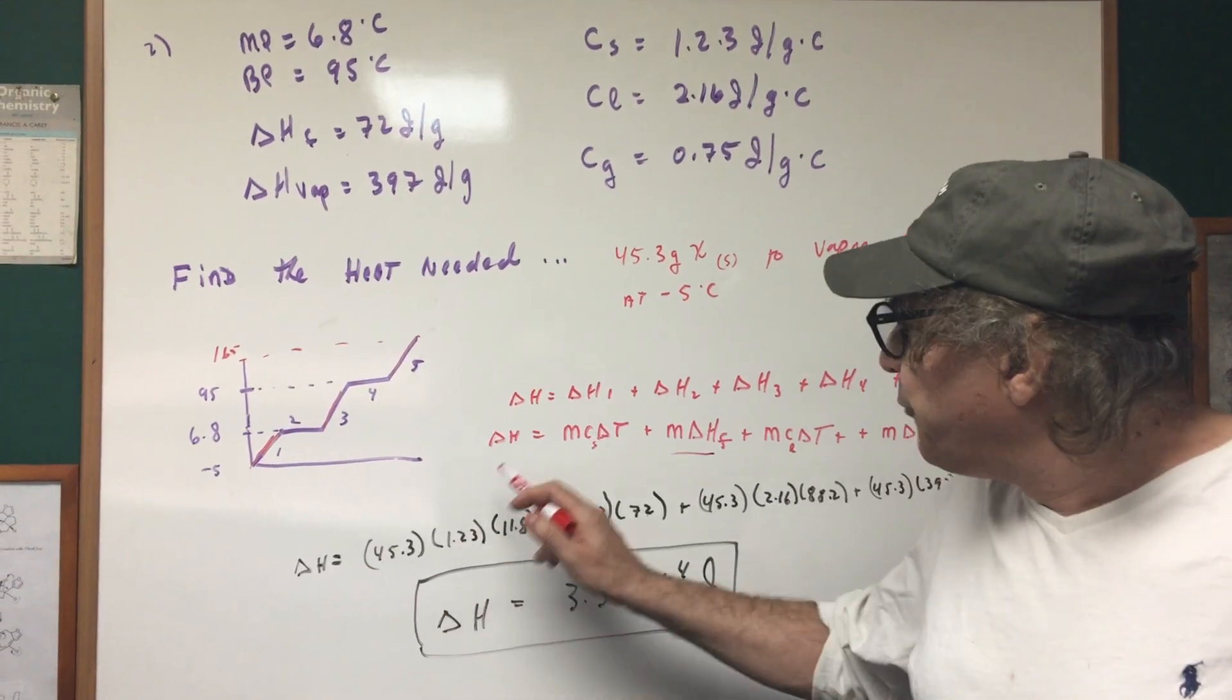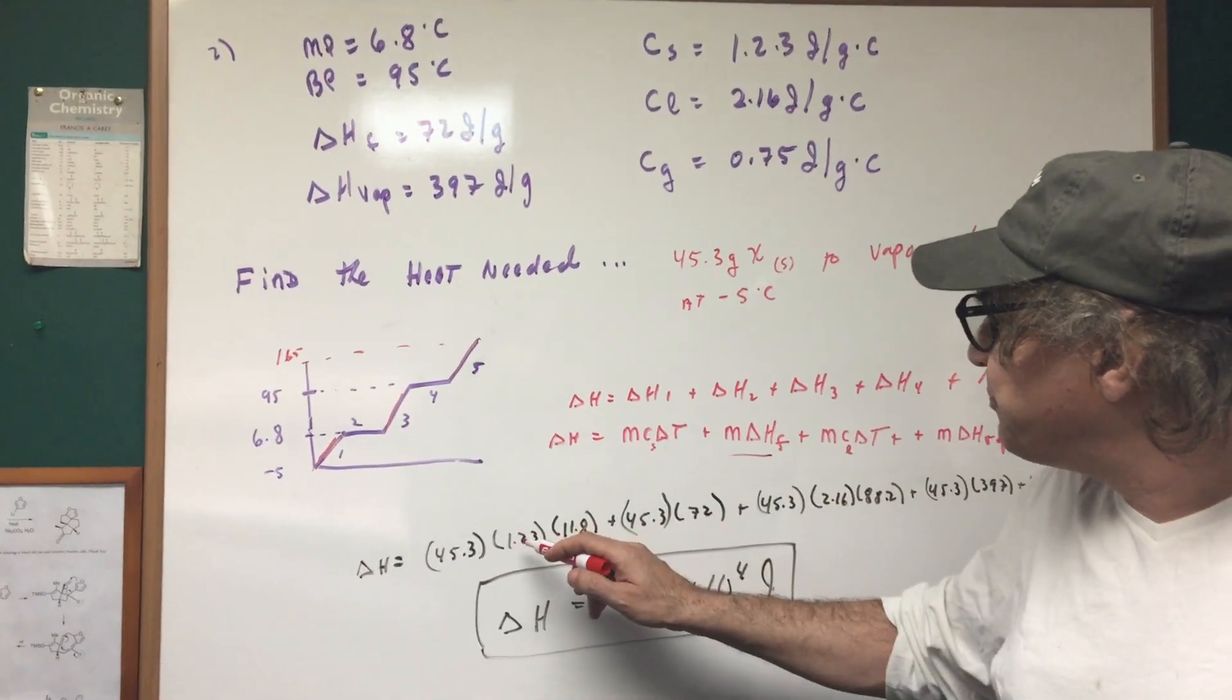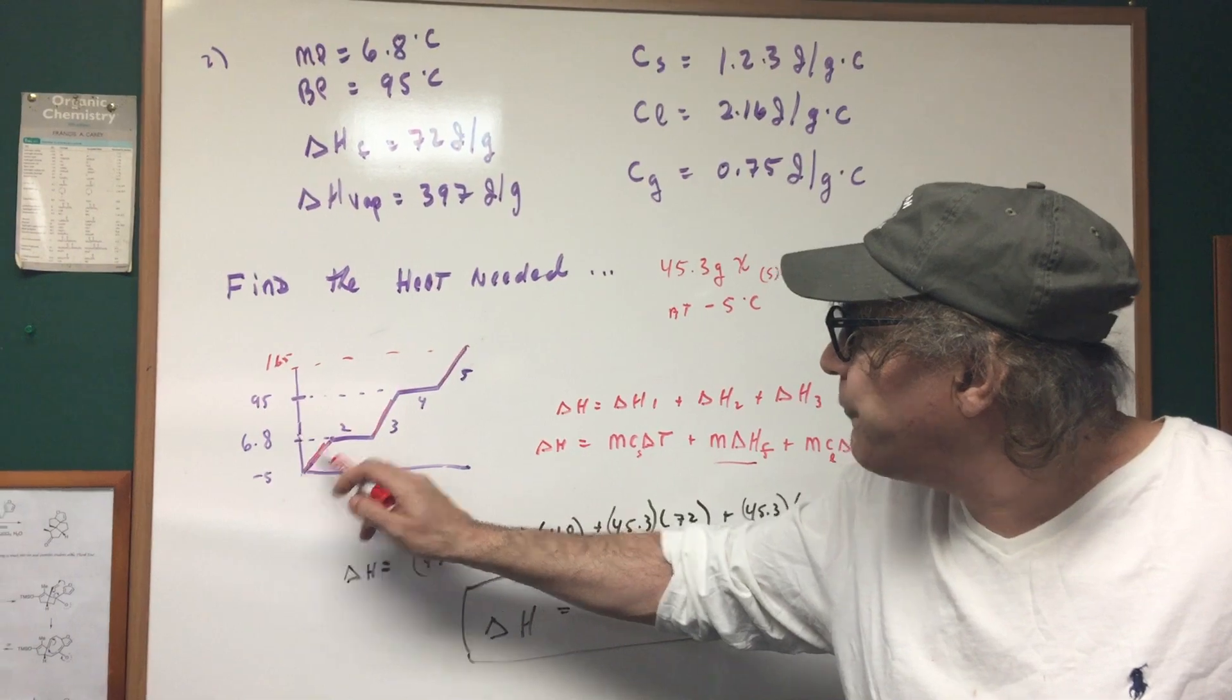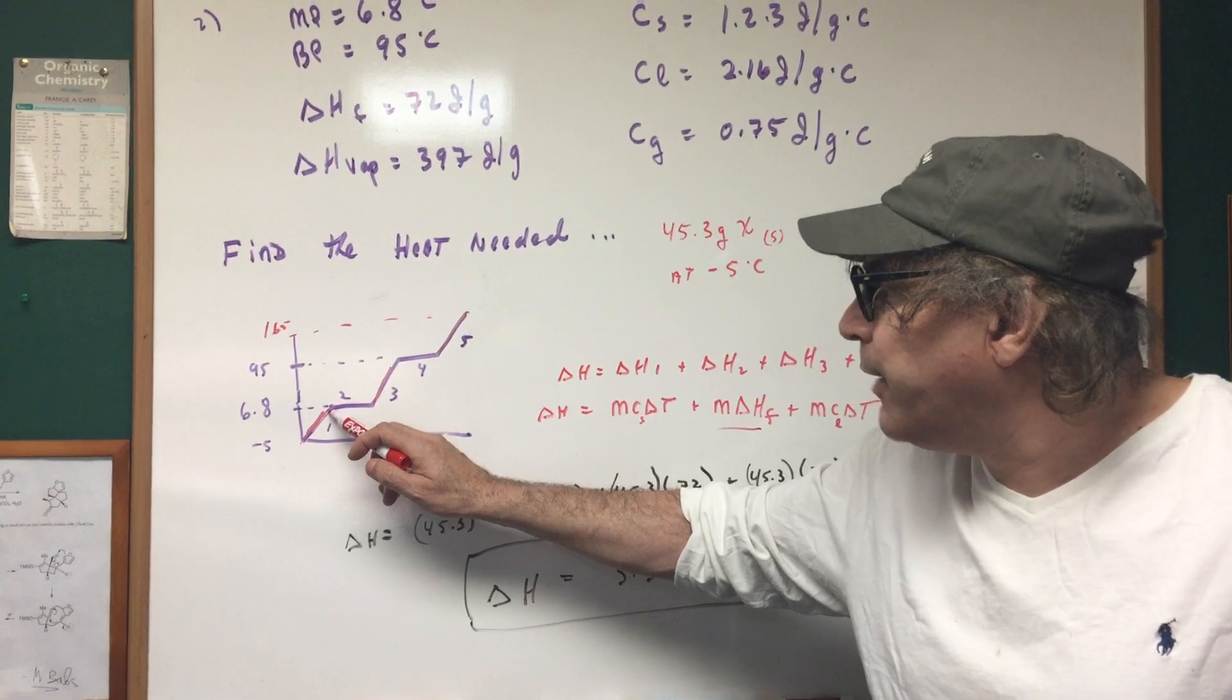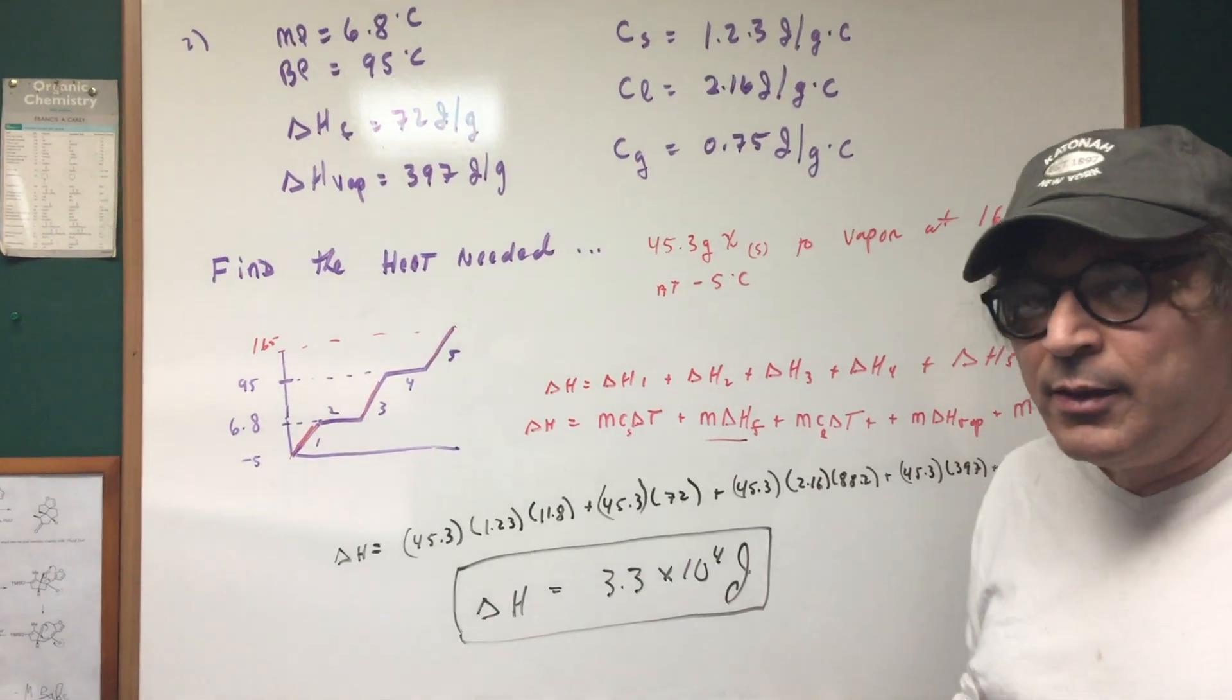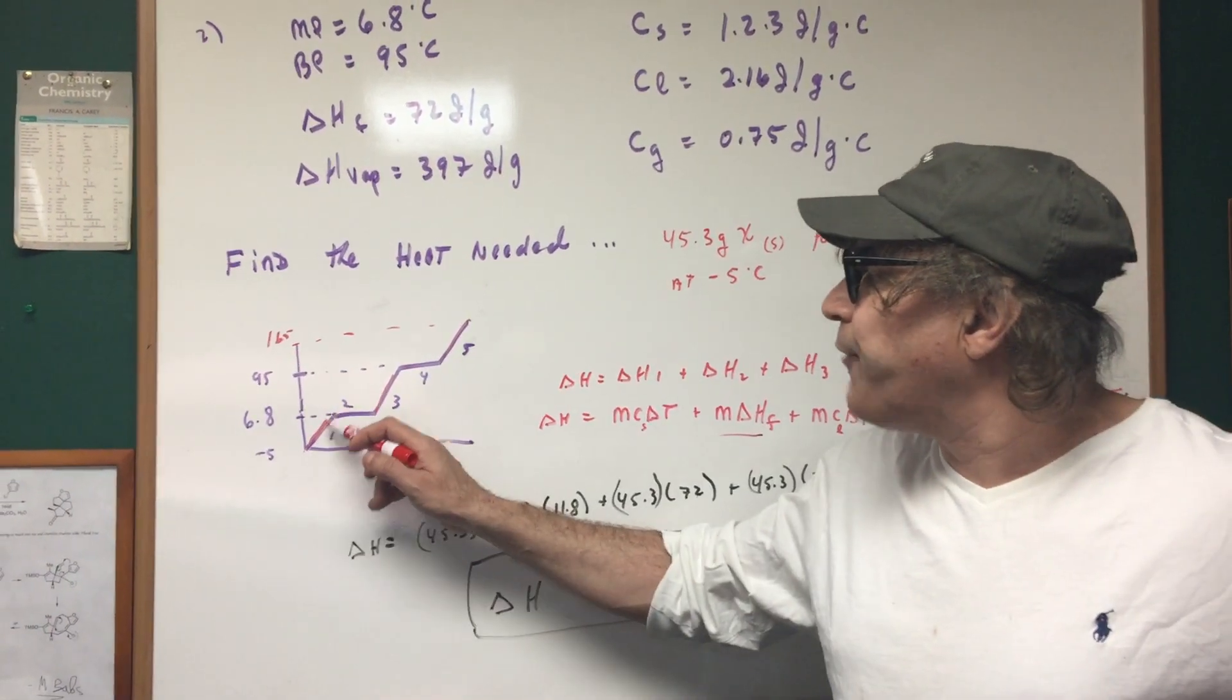And then all I did was plug in the numbers. For example the mass we know is 45.3, the specific heat you got to be careful you're in the solid phase 1.23, and you're going from negative five to 6.8. Well you first bring it up to zero so you got to add five that'll get you to zero and then 6.8 on top of that is where I get to 11.8. I actually have students who get confused on that, so to go from a negative five to a 6.8 is a change of 11.8.